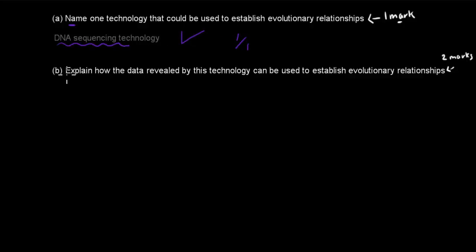The second part was explain, that's the verb here used. How the data revealed by this technology can be used to establish evolutionary relationships. So what you should first write about is what exactly this data is and how it gets this data. So, a brief description of how the technology actually works. And then how I can use that data. The second part is how I can use that data to establish your evolutionary relationships.